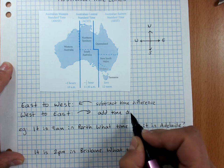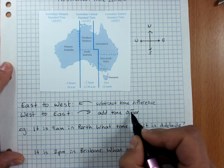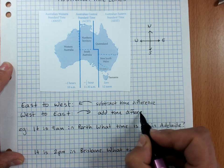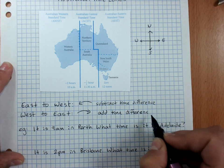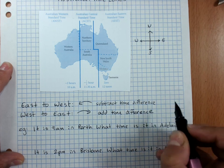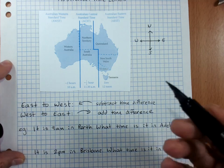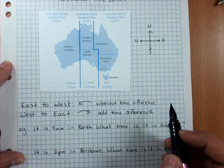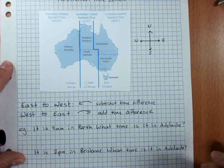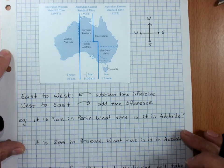There are lots of great apps. Time and Date will do these calculations for you. You can just Google the time in Perth and it will get that for you. But it is good to understand these, and of course you need to be able to do this for the test.